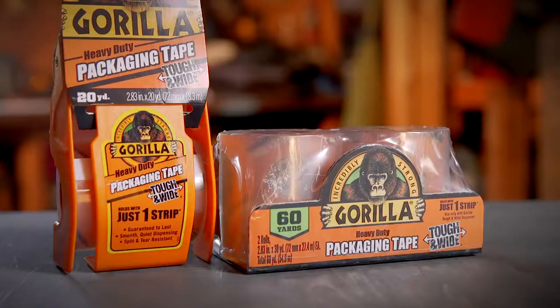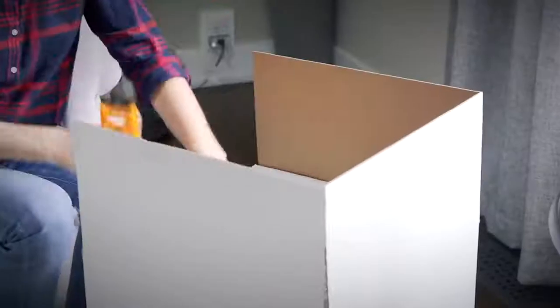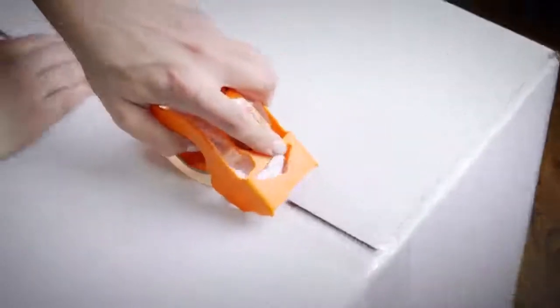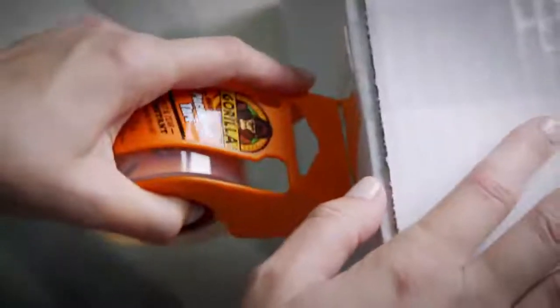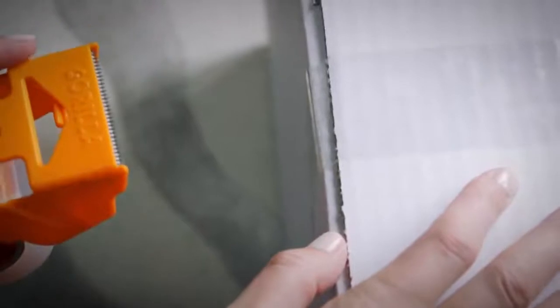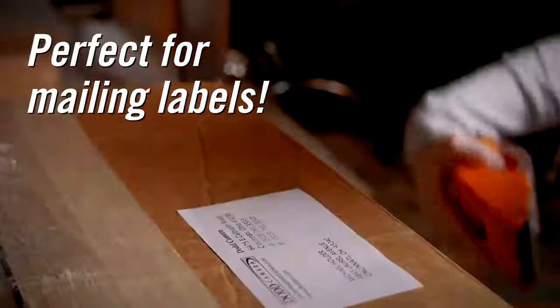Gorilla Packaging Tape provides the solution for moving, shipping, and storage. This crystal clear packing tape offers heavy-duty strength and durability while still being easy to cut. It's moisture and temperature resistant, so it's perfect for protecting box labels.